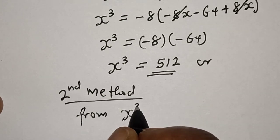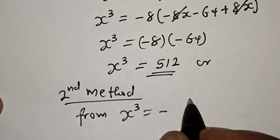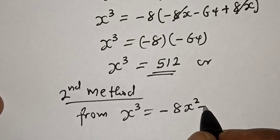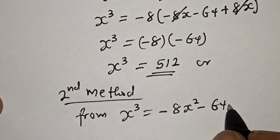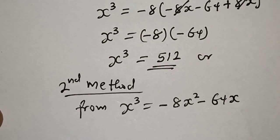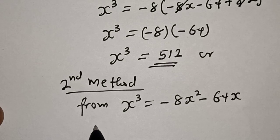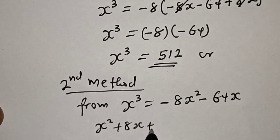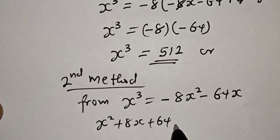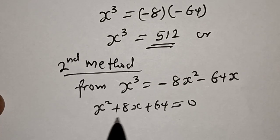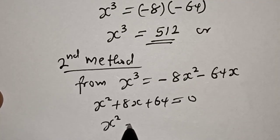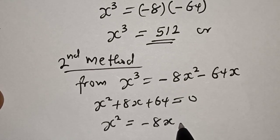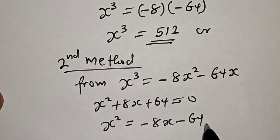Second method: from s³ = −8s² − 64x, and knowing the given equation s² + 8x + 64 = 0, we get s² = −8x − 64.